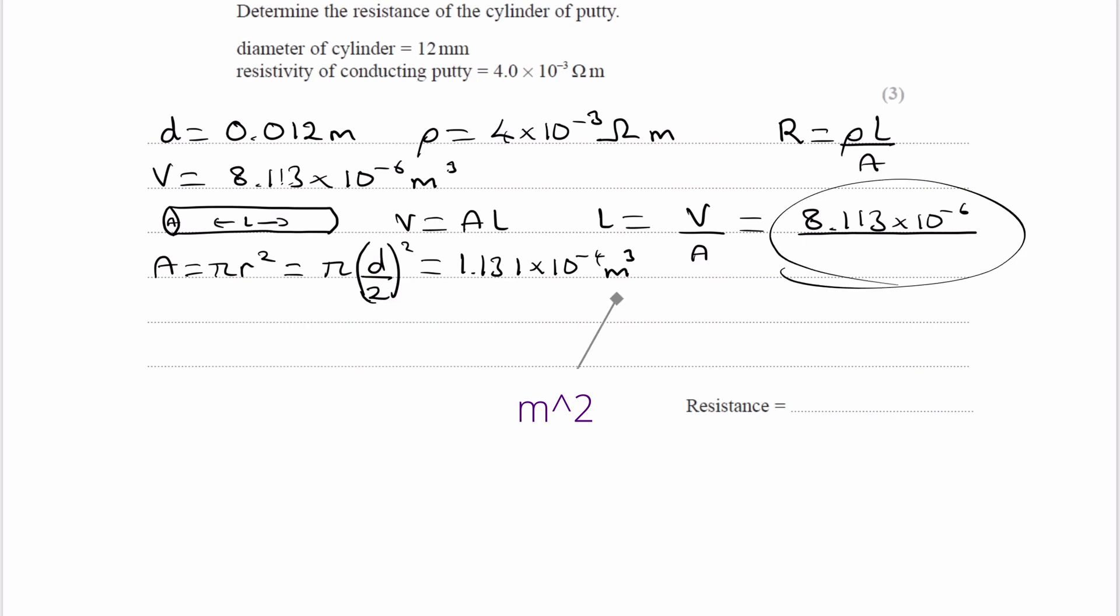So that's what we put in this equation then. The area, or the cross-sectional area of the cylinder, is 1.131 times 10 to the minus 4. And so we can work out our length. Our length is then equal to 0.07174.